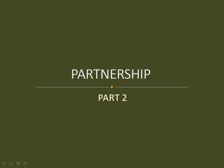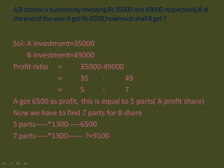Vinod Kumar here. In this video we are going to learn some problems in the partnership chapter. In the previous video we learned some important principles in partnerships, and based on those principles we are going to learn problems in this section. So now let us move on to the problems. A and B started a business by investing rupees 35,000 and 49,000 respectively. If at the end of the year A got 6,500, how much shall B get?